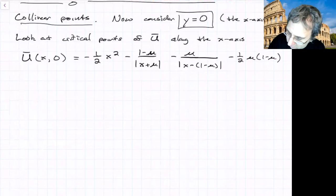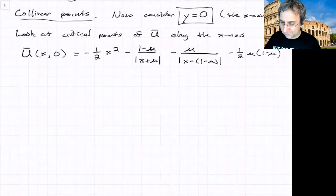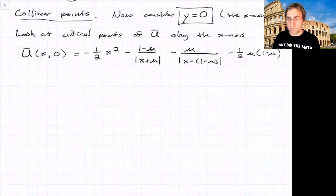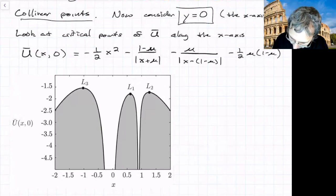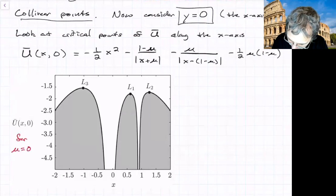These are the collinear points. To find critical points, we need to take a partial derivative of this. But let me first show you a plot of what it looks like. This is for a value of mu equal to 0.1, so pretty large. With computers, it's pretty easy to draw this thing.